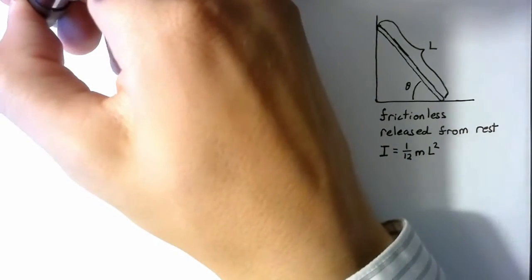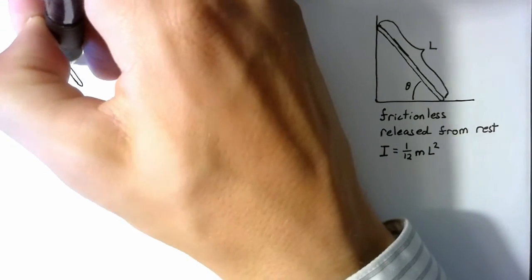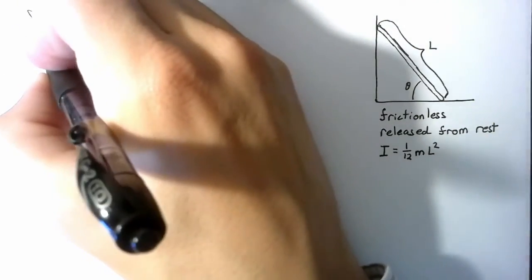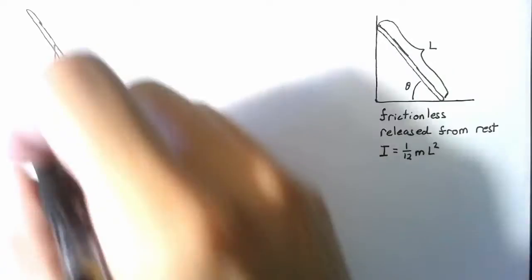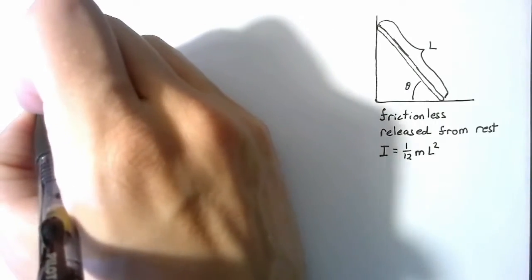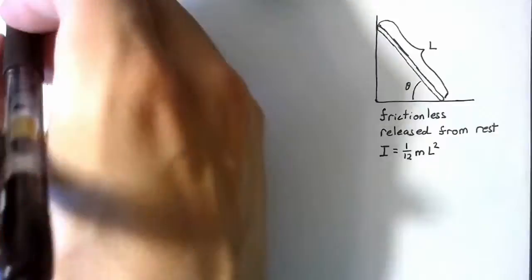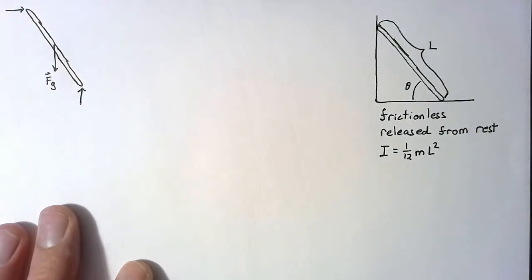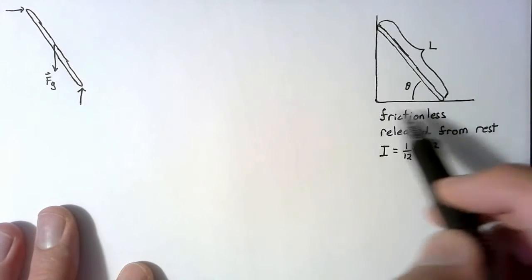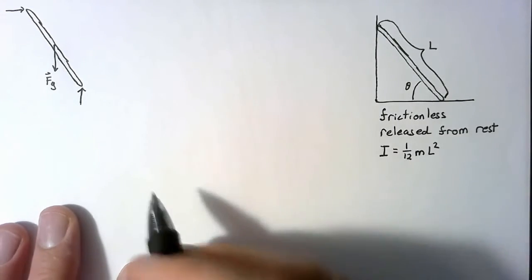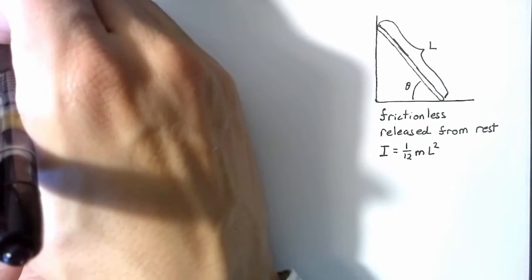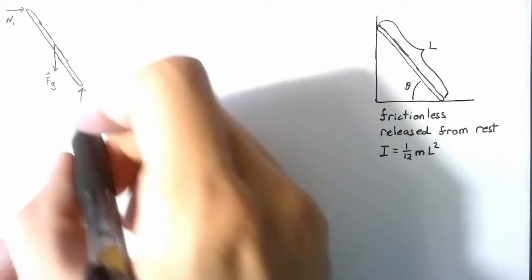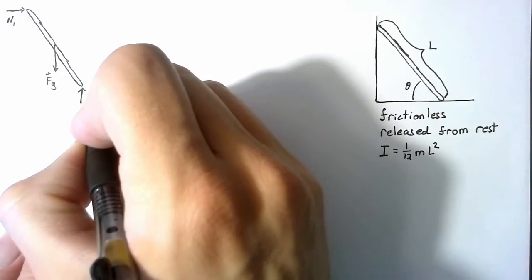The first step for any problem is to go ahead and draw a free body diagram. The most obvious force is going to be the force of gravity pulling down at the center of gravity, which is right in the center of the rod. And then we have two normal forces, exactly perpendicular to the surfaces where contact occurs. N1 is going to be directly to the right, and N2 is going to be directly up.